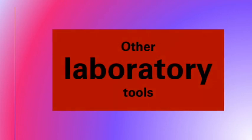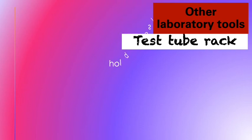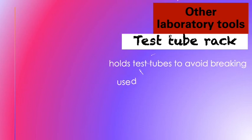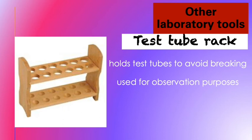The next category is other laboratory tools. The first one is the test tube rack. It holds test tubes to avoid breaking, and it is also used for observation purposes. Here's a picture of a test tube rack.